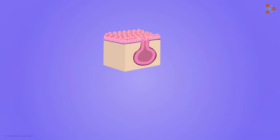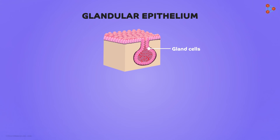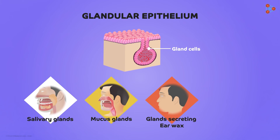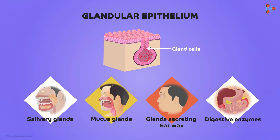Lastly, we also find certain specialized modifications in cuboidal cells — they attain the capacity to secrete important substances in the body. These are formed by inward folds in the cuboidal cells. The cells are called gland cells, and the tissue is called glandular epithelium. These are found in parts involved in secretion, such as the salivary glands, mucus glands, glands secreting ear wax, mammary glands, and glands producing digestive enzymes.